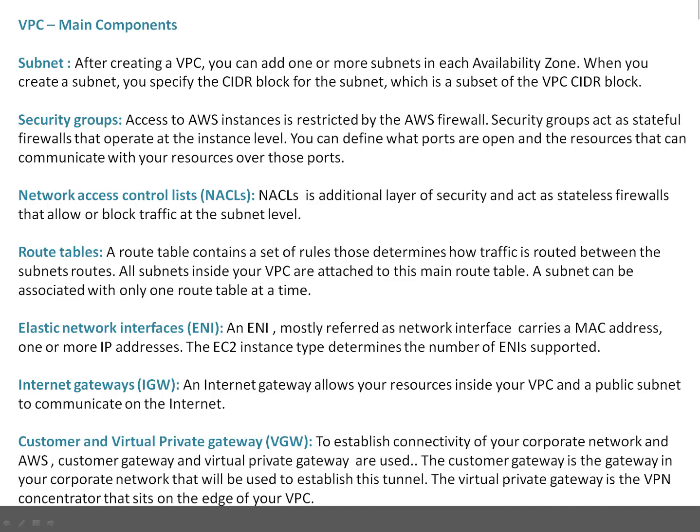Security groups are essentially stateful firewalls. A firewall can block or allow traffic based on defined rules. Access to AWS instances is restricted by this firewall — the security group. You can define in a security group what ports are open and from where they can be accessed — for example, from a specific source IP address, a CIDR block, from anywhere, or from a custom network.